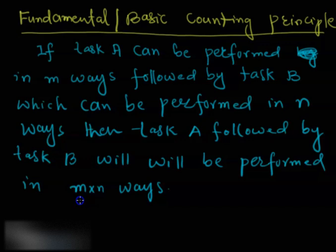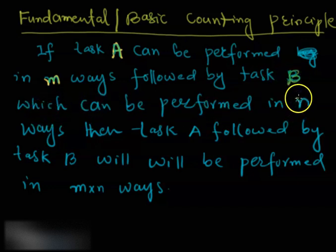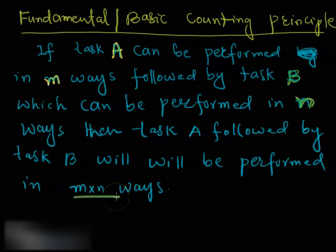To make this clear: you have task A which can be performed in M ways, followed by task B which can be performed in N ways. So you are doing first task A, which can be performed in M different ways, followed by B, another task which can be performed in N ways. Then if you are doing together A followed by B, you can do this combined task in M times N ways.